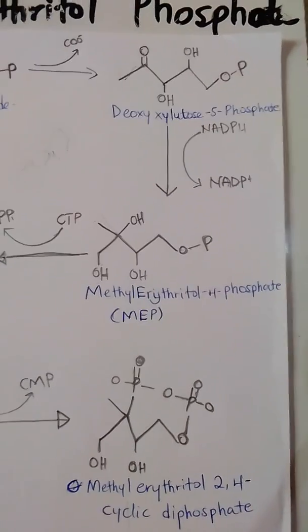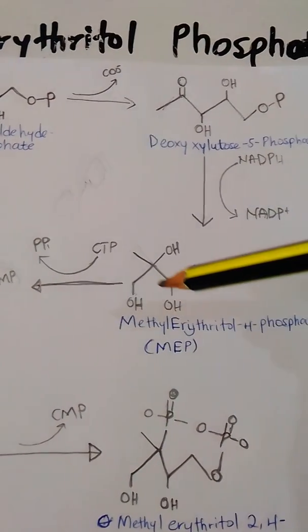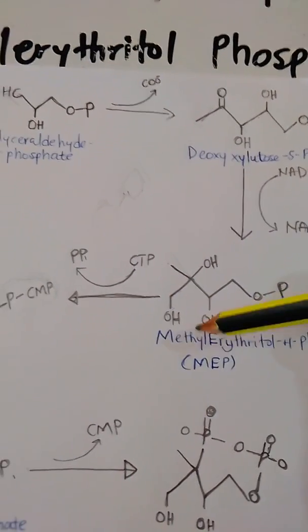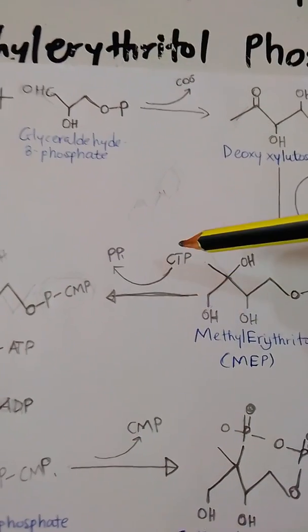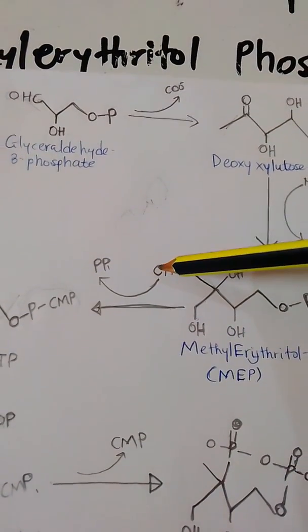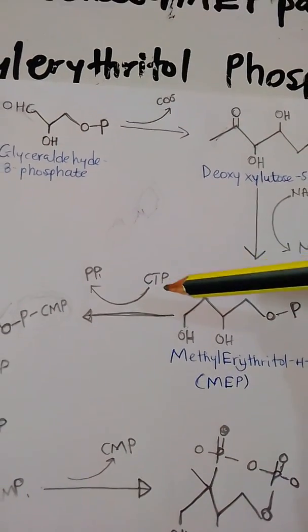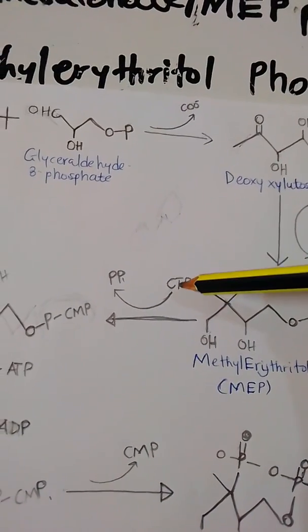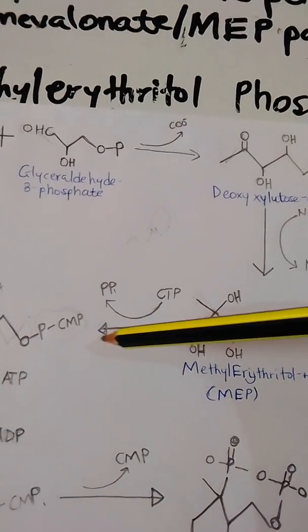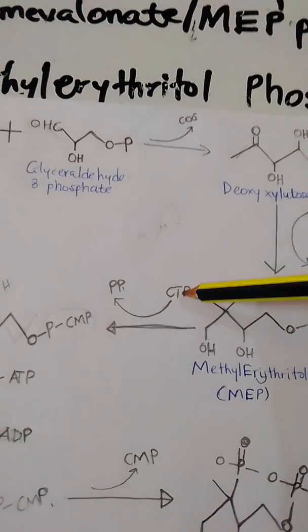The next reaction is the activation of the MEP. The activator which improves the reactivity of the MEP is CMP, cytidine monophosphate. That CMP is generated from CTP, cytidine triphosphate — a nucleotide. An enzyme catalyzes this reaction and releases two phosphates from the CTP so that one phosphate remains.